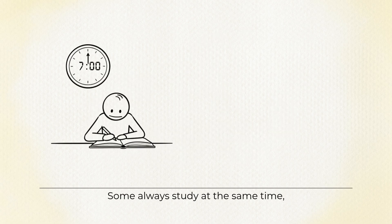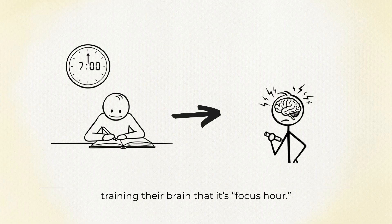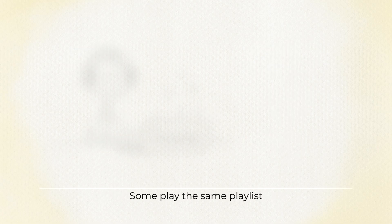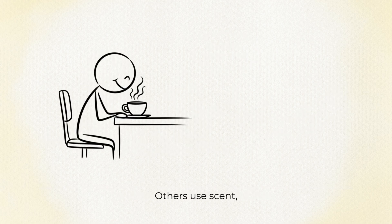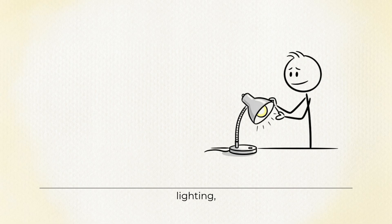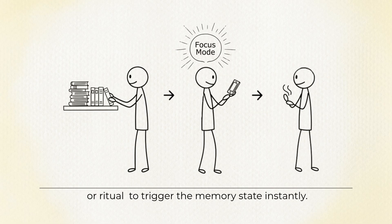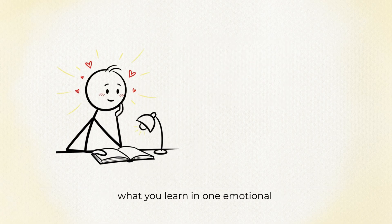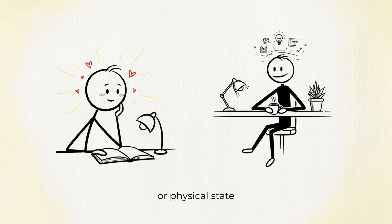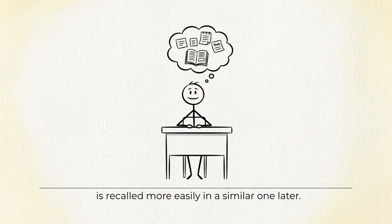Some always study at the same time, training their brain that it's focus hour. Some play the same playlist to create rhythm and familiarity. Others use scent, lighting, or ritual to trigger the memory state instantly. This is called state-dependent learning: the idea that what you learn in one emotional or physical state is recalled more easily in a similar one later.